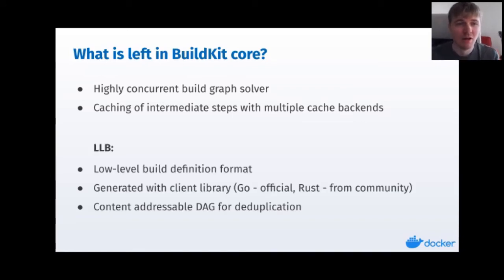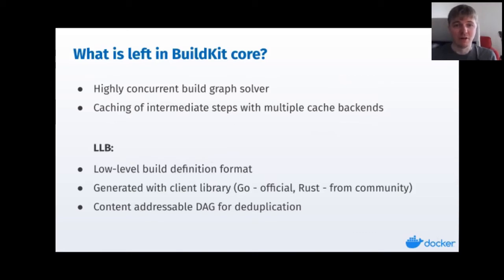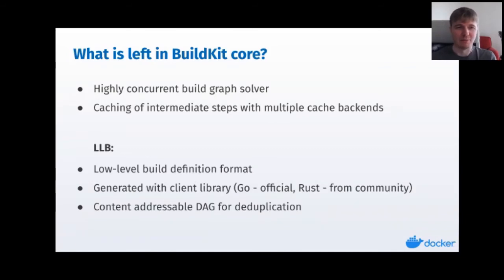BuildKit itself doesn't know anything about Dockerfiles — that's all in frontends. There's another definition format used by the solver, a very low-level binary format called LLB that users really do not see at all. That's the format that frontends use. You can draw a parallel here to the LLVM intermediate representation — frontends compile to LLB, and then the BuildKit solver actually executes the LLB format.